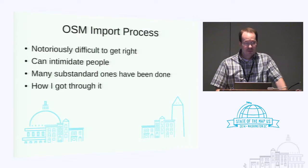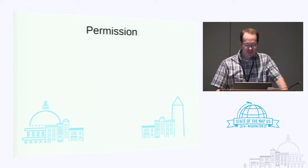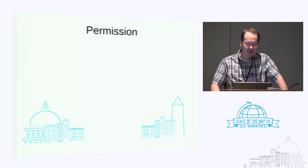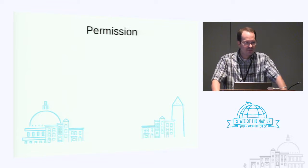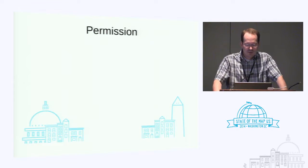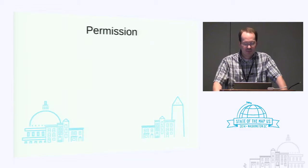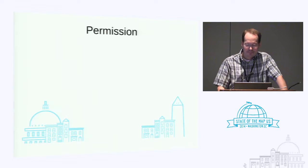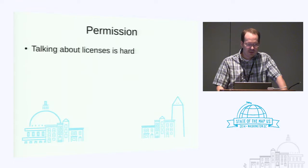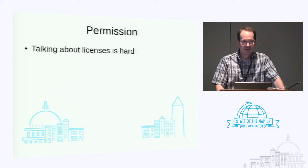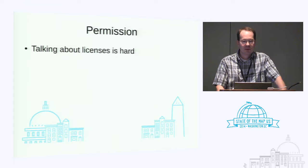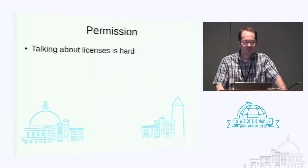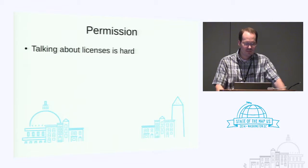So this is just kind of a quick rundown of how I got through the process. The first part is obviously obtaining permission. As Ian pointed out, it can be tricky sometimes. In my case, talking with licenses with local GIS people is often kind of hard. In my case, they were very receptive to the idea, but they're not lawyers.